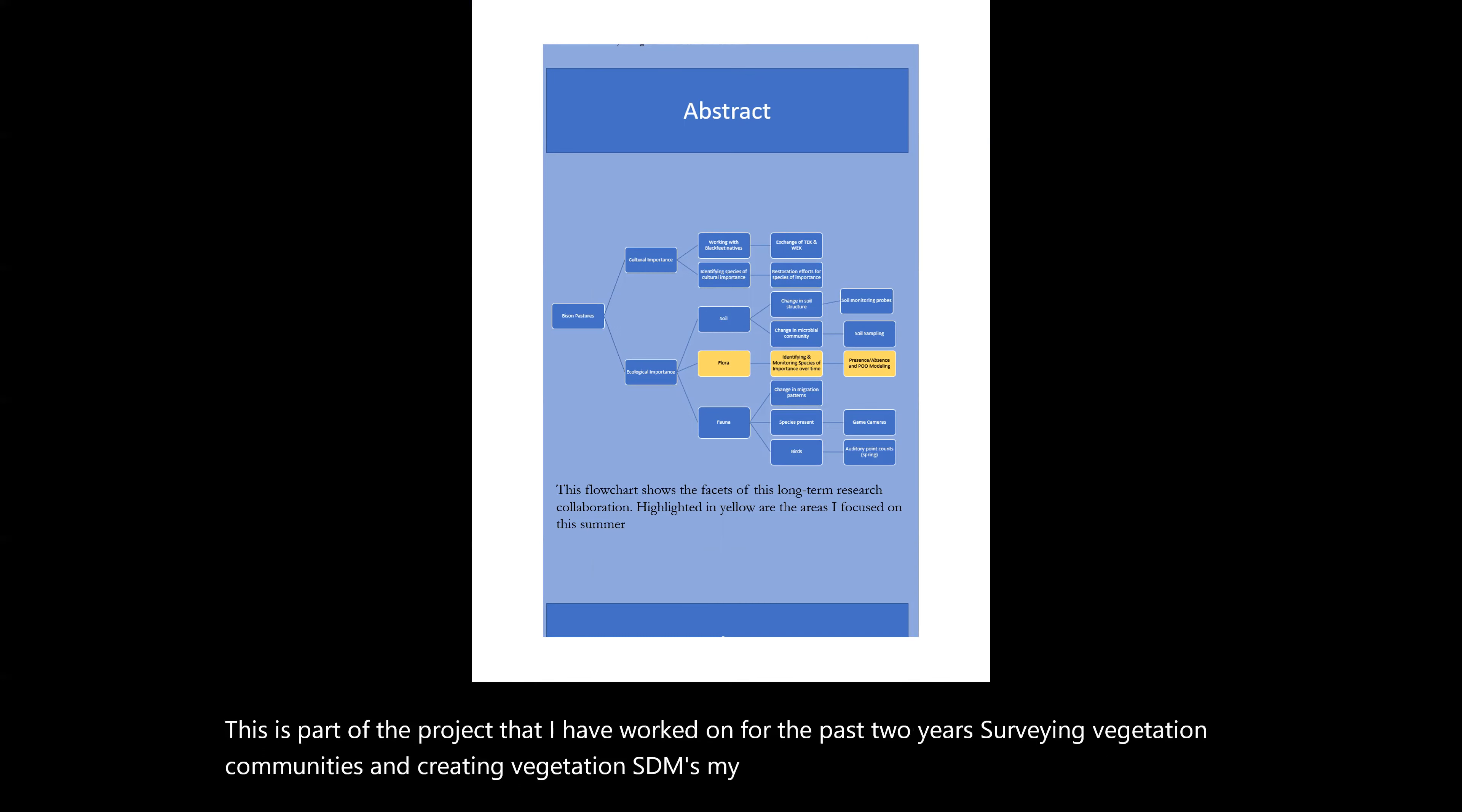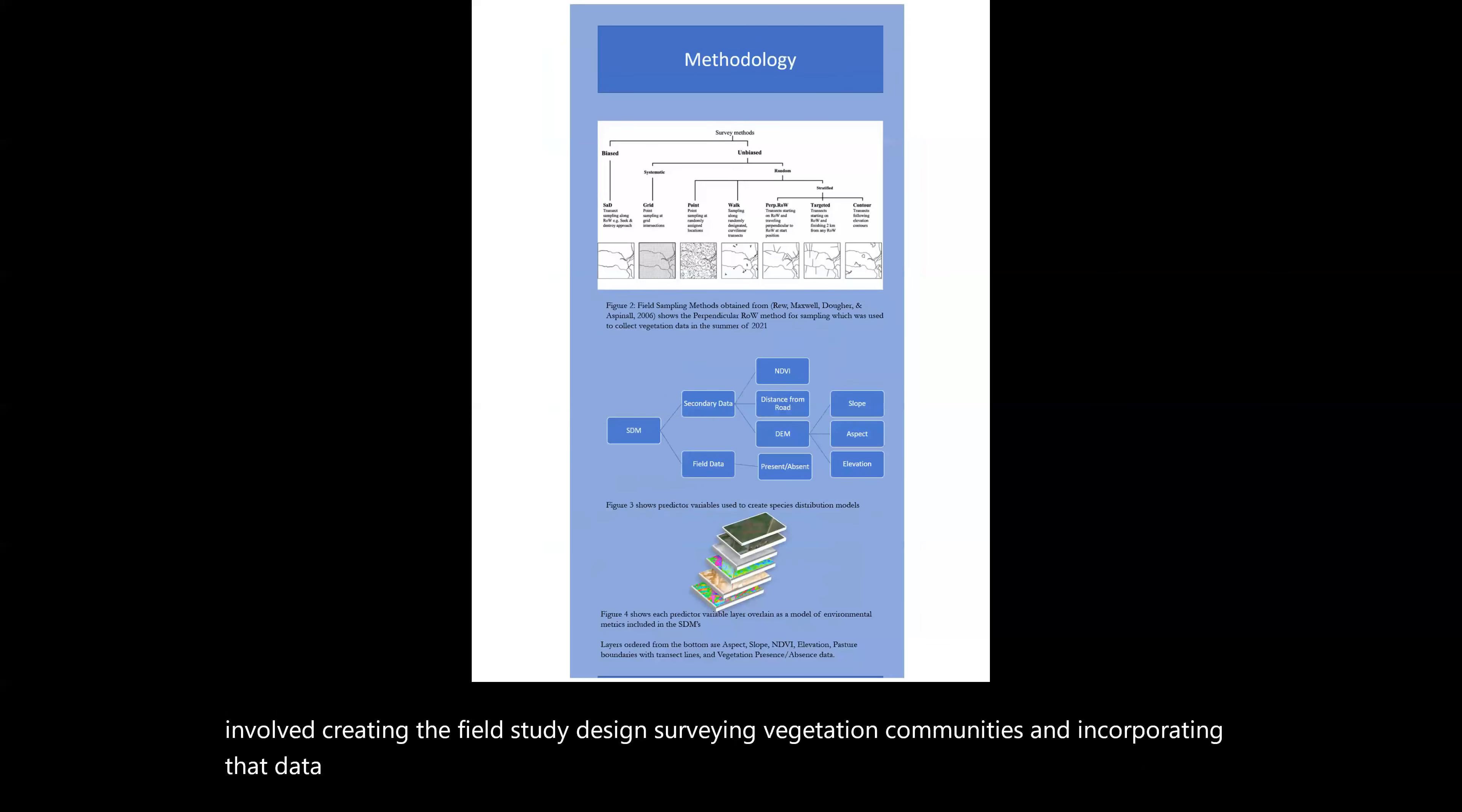My goal and outcome from the summer involved creating a field study design, surveying vegetation communities, and incorporating that data into species distribution models. In this study, we are using generalized linear modeling to create our SDMs using NDVI data, as well as slope, elevation, aspect, and Euclidean distance from roads as environmental predictor variables.